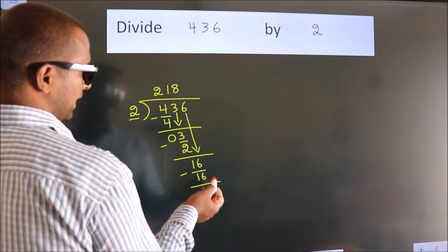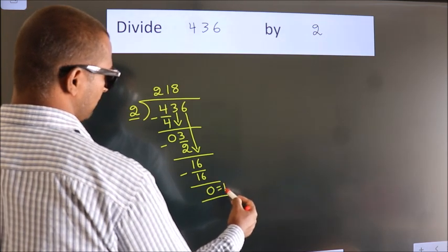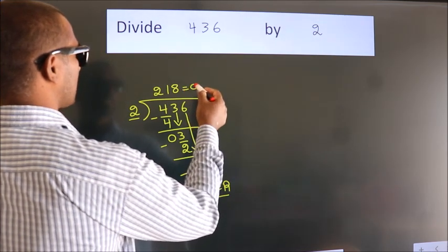No more numbers to bring it down. So we stop here. This is our remainder. This is our quotient.